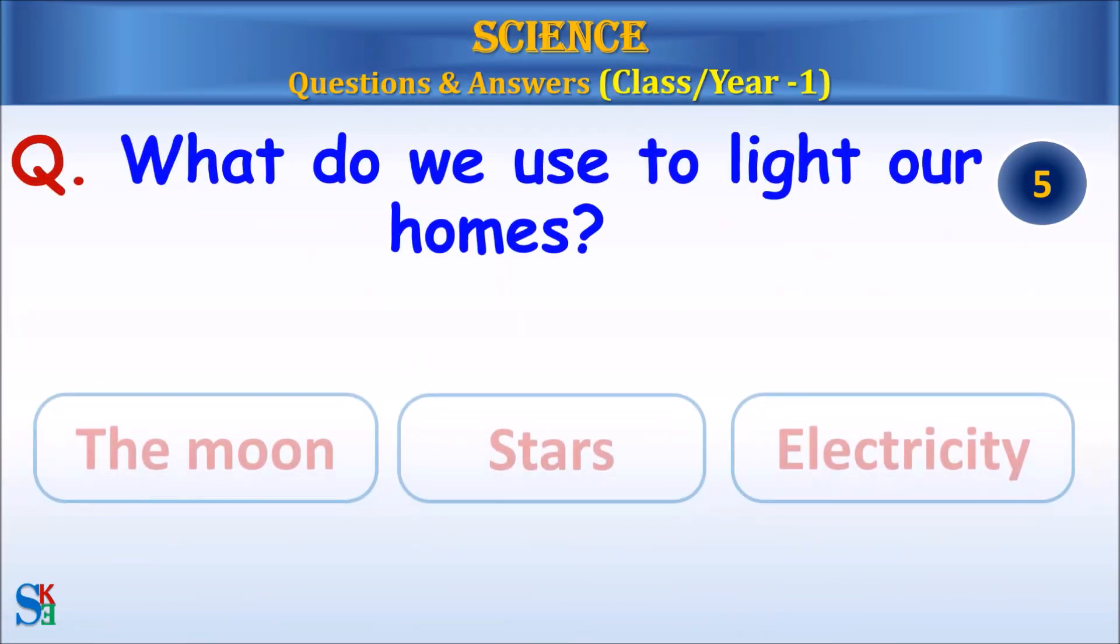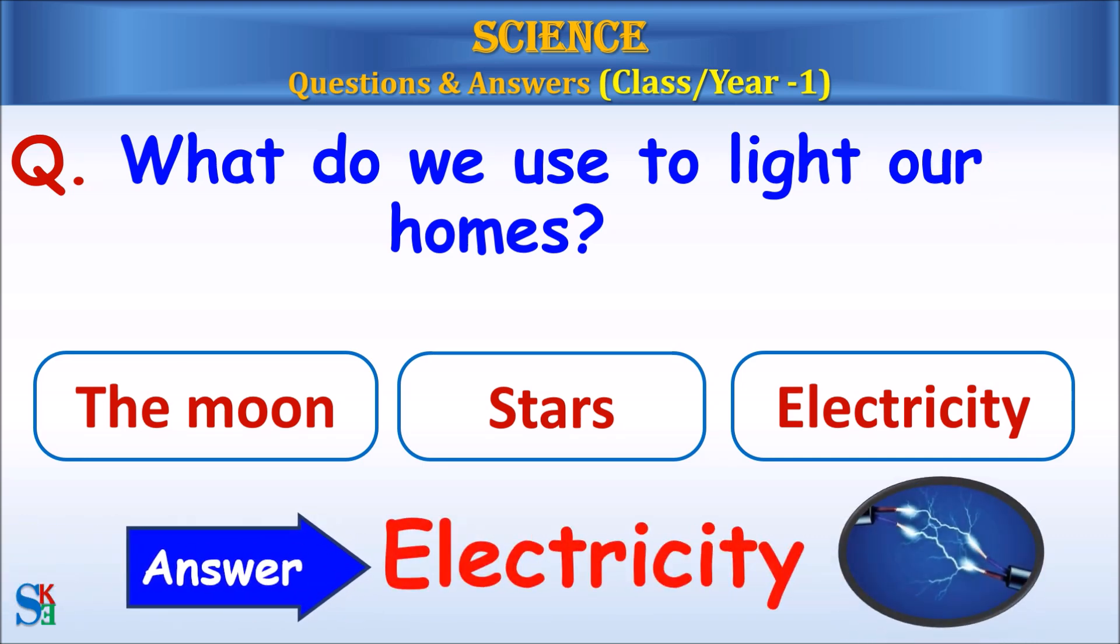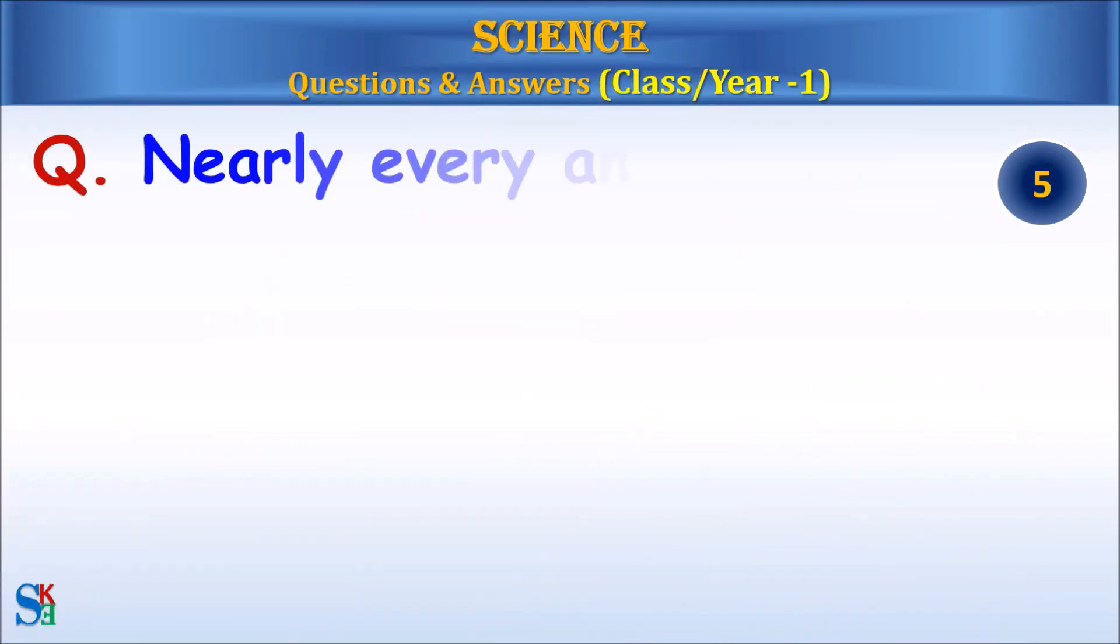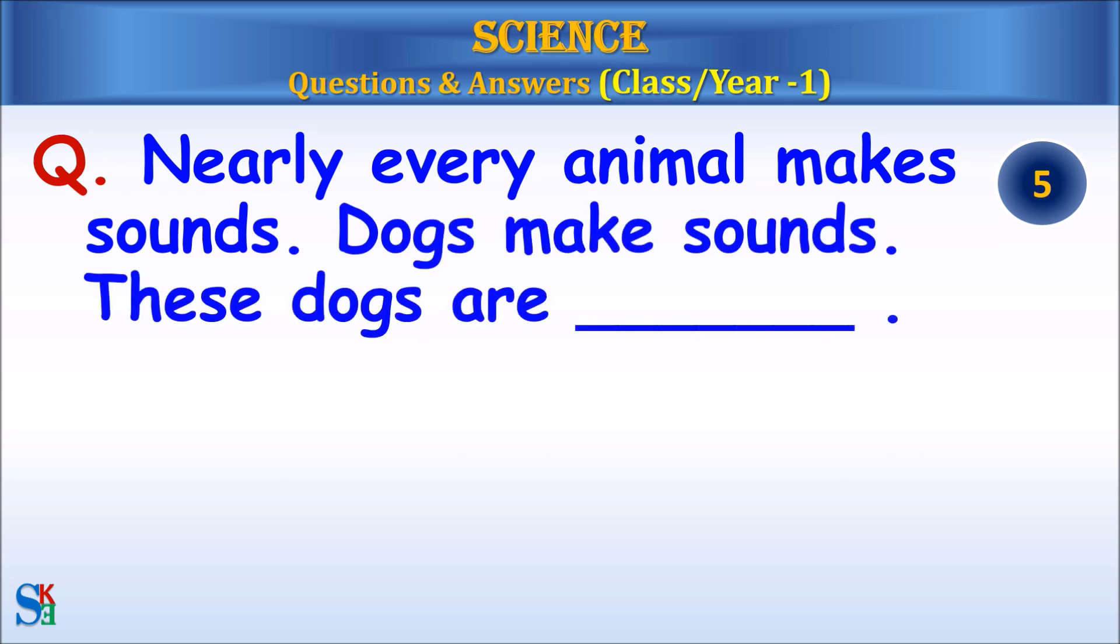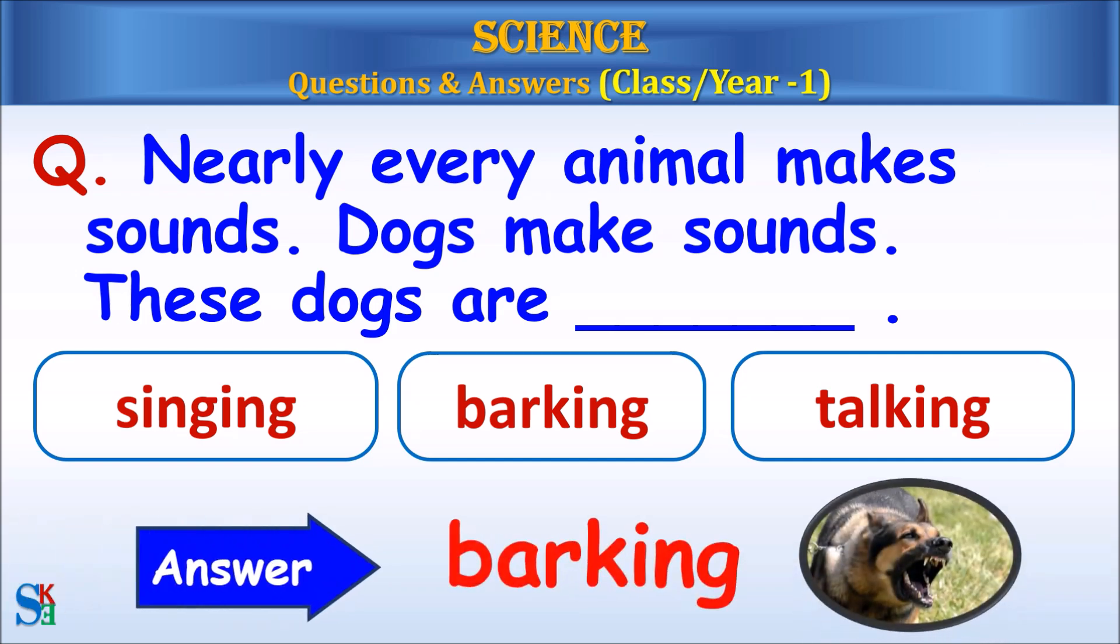What do we use to light our homes, the moon, stars, or electricity? Answer: electricity. Nearly every animal makes sounds. Dogs make sounds. These dogs are singing, barking, or talking. Answer: barking.